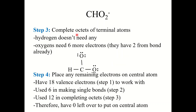Step three: complete the octets of the terminal atoms. Hydrogen doesn't need any more. Each oxygen has two electrons from the bond, so each oxygen needs six more electrons. Step four: place any remaining electrons on the central atom. We had 18 valence electrons; we used six making the single bonds and then twelve completing those octets, for a total of 18 used — therefore we don't have any left over to put on the central atom. We've used all available electrons.